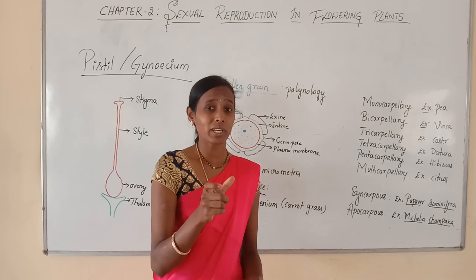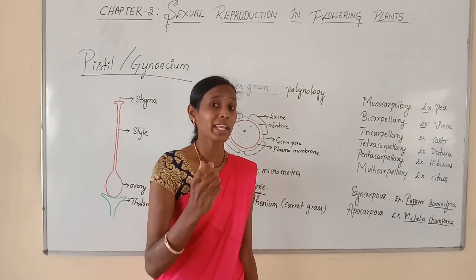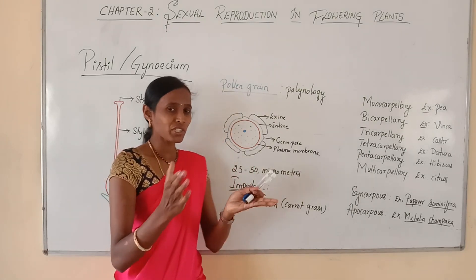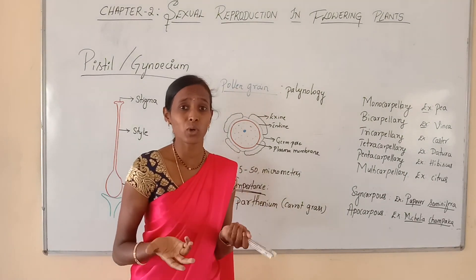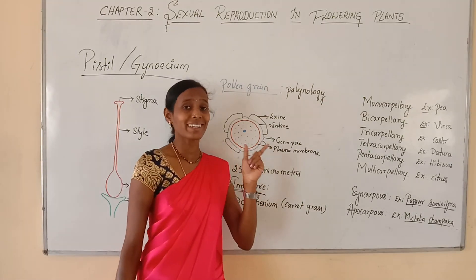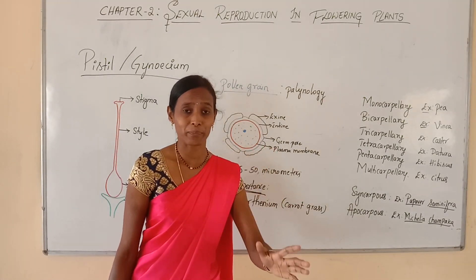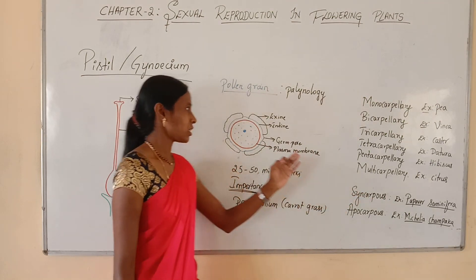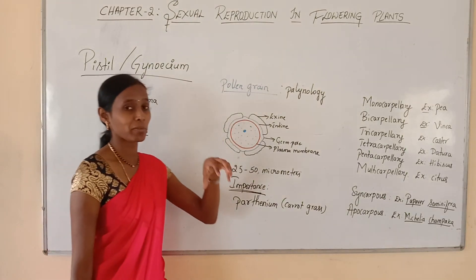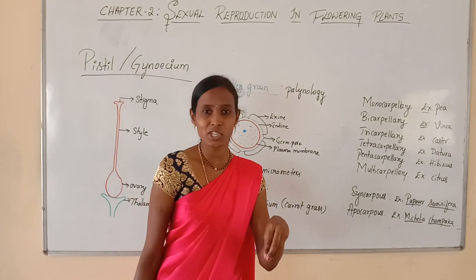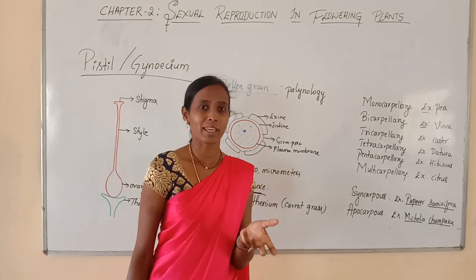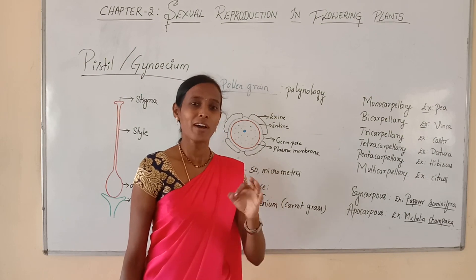After shedding, pollen grains may shed at a two-cell stage or a three-cell stage. After shedding, these pollen grains have to land on the stigma — the female reproductive structure — in order to bring about fertilization before they lose their viability. Viability means the efficiency to work; before they expire, they have to undergo fertilization.